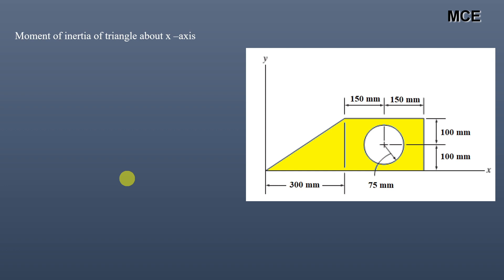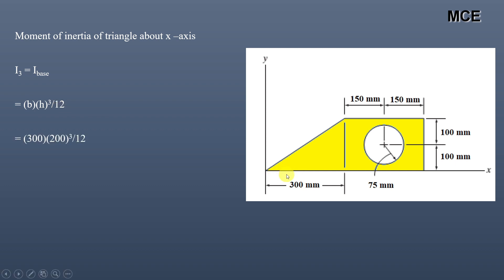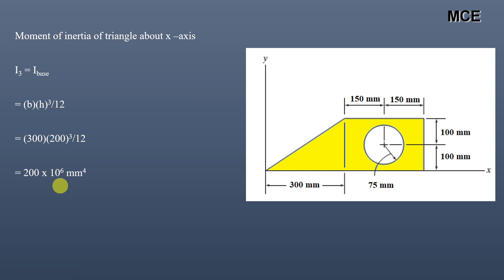Next, we find the moment of inertia of the triangle about the x-axis. We can simply calculate the moment of inertia of this triangle about its base, since the x-axis is also the base of this triangle. The moment of inertia of a triangle about its base equals base × height³ / 12. The base is 300 mm and the height, since this is a right-angle triangle, is 100 + 100 = 200 mm. Substituting values, the result is 200 × 10⁶ mm⁴.